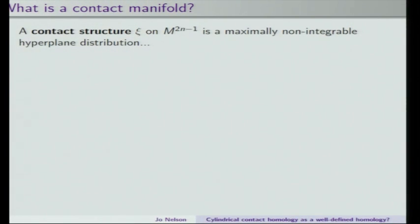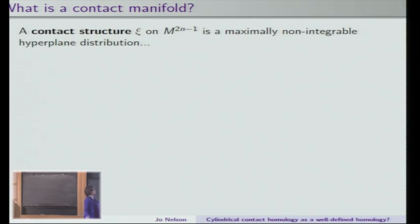So first, I'm going to briefly explain what a contact manifold is and what contact homology is supposed to be, and why we have the question mark and stuff. Since it's a 15-minute talk, I'm kind of hiding a lot of details under the rug, and there will be a lot of pictures — kind of proof by picture — which is an interesting way to do analysis, but that's okay.